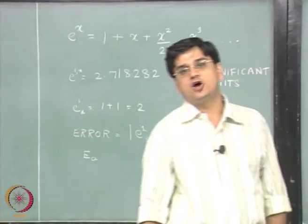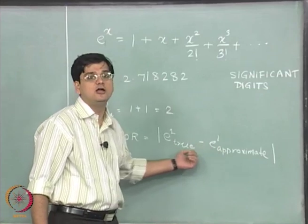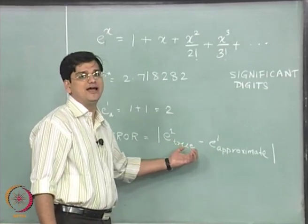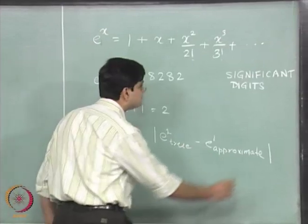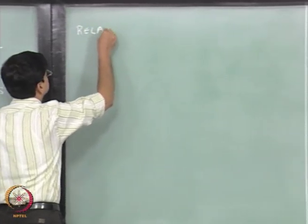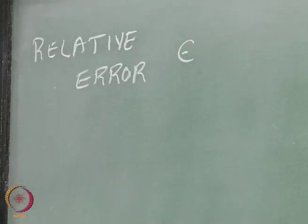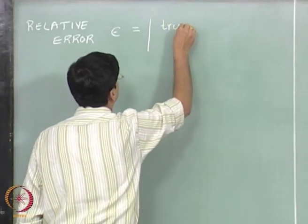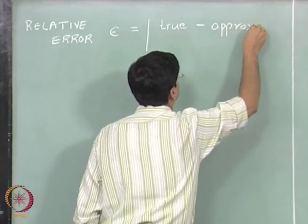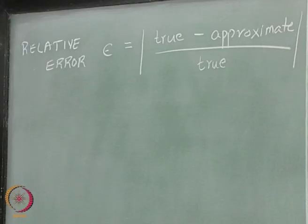Now the absolute error is not the only criterion that we are interested in. What is sometimes more useful is to find out how far the two numbers deviate compared to what the true value of e to the power 1 is. In that particular case, the error which is known as the relative error, which we will represent using the term epsilon. This is the relative error that we are interested in tracking.